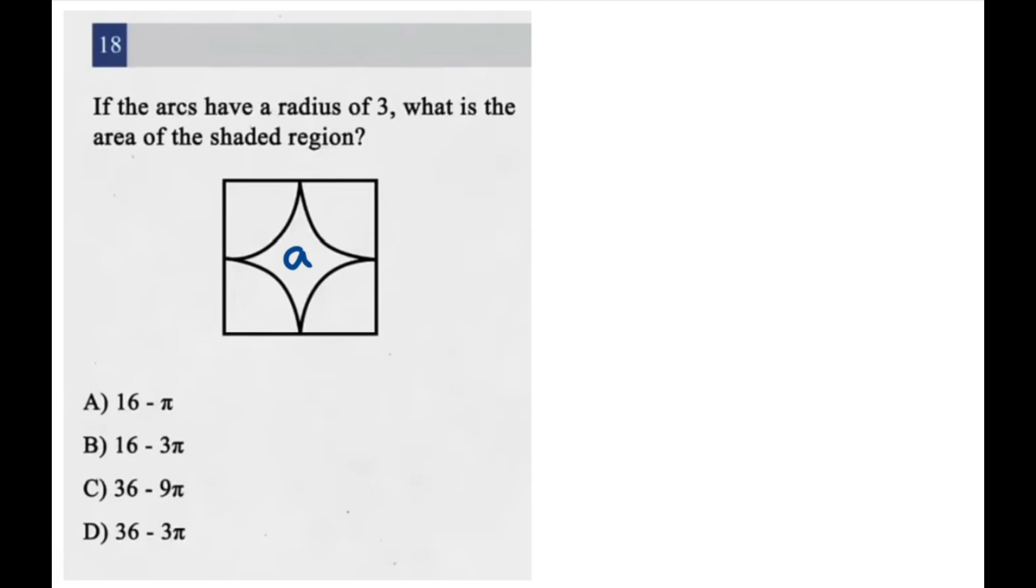All right, so we know that the radius of these arcs is 3, so we can just mark this as 3. And we know that this is a square because if all of these are 3, then that means all of the edges of the square are going to be equal.